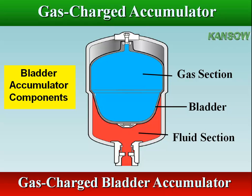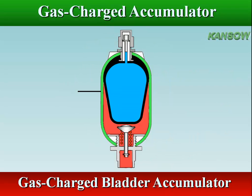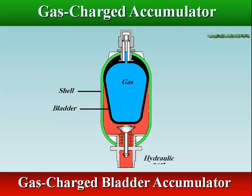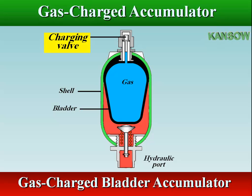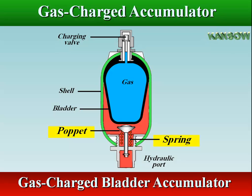The fluid around the bladder, hydraulic oil, is connected to the external hydraulic circuit. The accumulator is charged with nitrogen through a valve installed on the top. The accumulator will be pre-charged to nominal pressure when the pumps are not operating. A poppet valve, normally held open by spring pressure, prevents the bladder from extruding out of the fluid port.